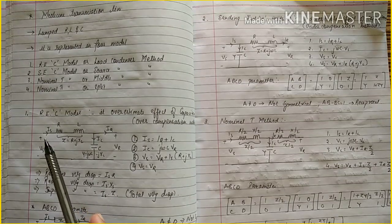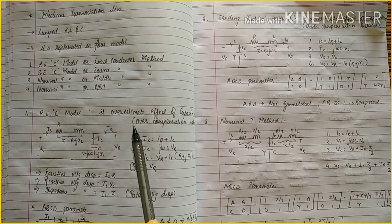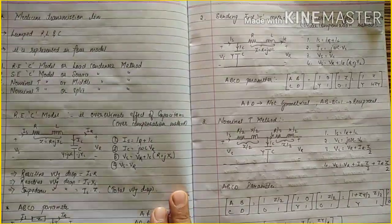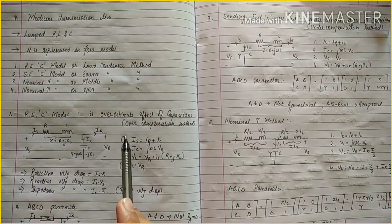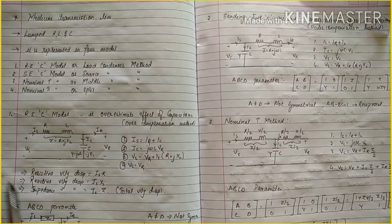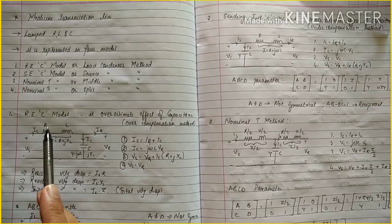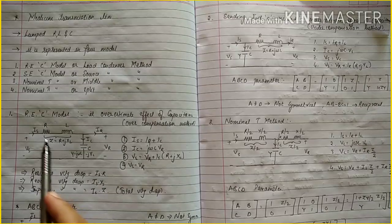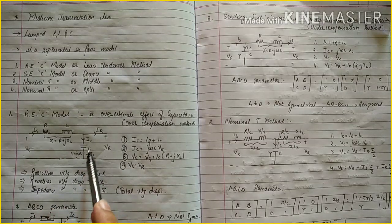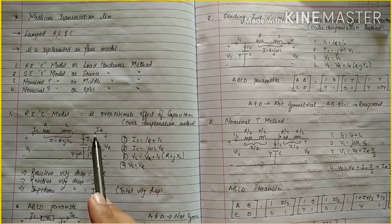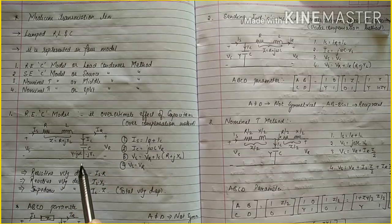First we will see the receiving end capacitor model. In this model it overestimates the effect of capacitance, and we can also say it is an overcompensation method. This is the diagram of the receiving end capacitor model. In the diagram you can see the capacitor is connected towards the load, meaning at the receiving side. So it is known as the receiving end capacitor model.